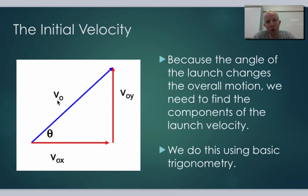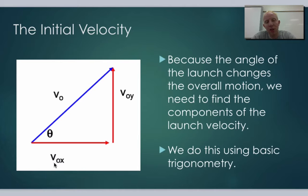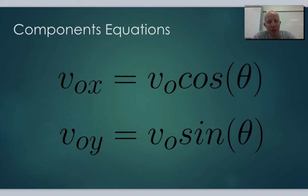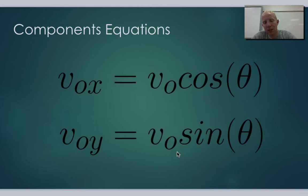You'll see them abbreviated as v naught x and v naught y — initial velocity in the x direction and initial velocity in the y direction. The total velocity, v naught, isn't helpful to us unless we can break it down into these components. From basic trigonometry, if you want to find the vertical side given the hypotenuse and the angle, you use sine; for the horizontal side, you use cosine.